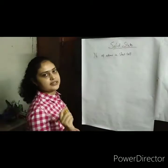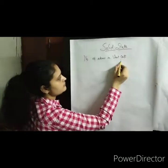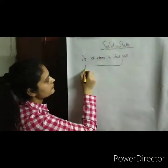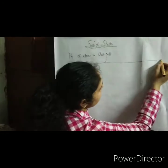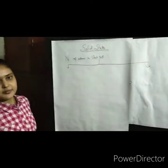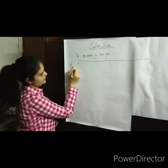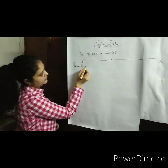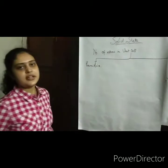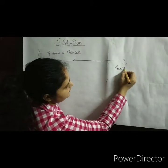Unit cells are broadly classified into two types. The first type is the primitive unit cell and the second type is the centered unit cell.